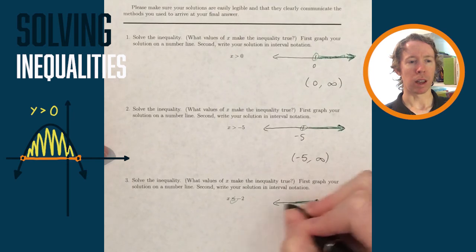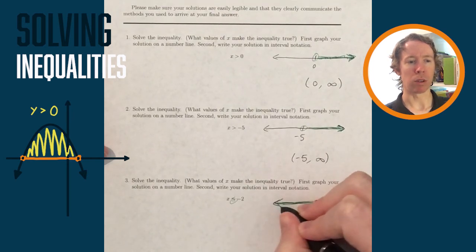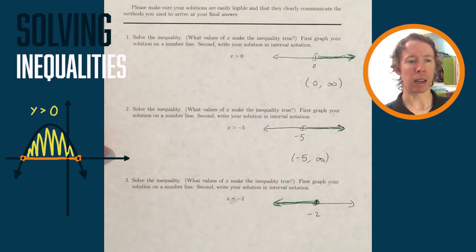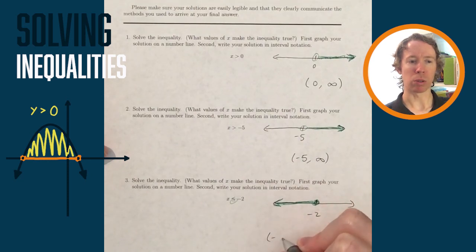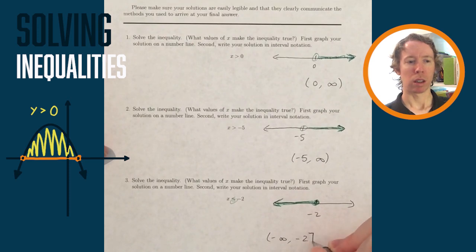And then for interval notation, I do open parentheses negative infinity, comma negative 2, I close it with a closed bracket to say that negative 2 is included. The negative infinity says I'm going forever to the left.